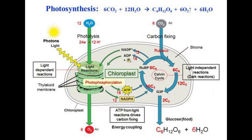In the Calvin cycle stage, CO2 is taken up by the chloroplasts and combined with hydrogen ions to form glucose through a series of reactions. The glucose is then used by the plant as a source of energy or stored for later use.